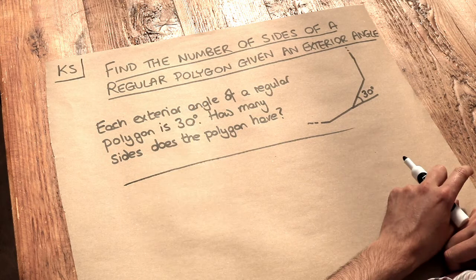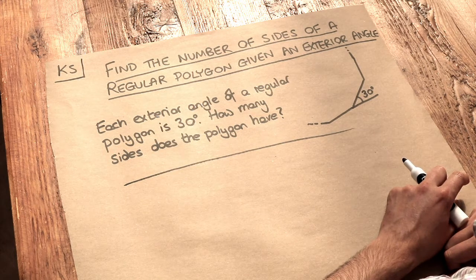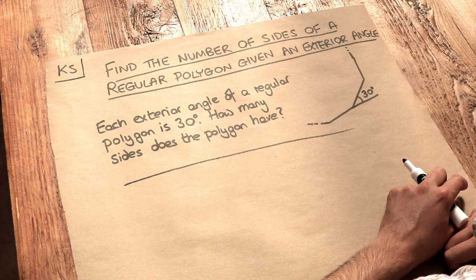We've got this problem here. Each exterior angle of a regular polygon is 30 degrees. How many sides does the polygon have?